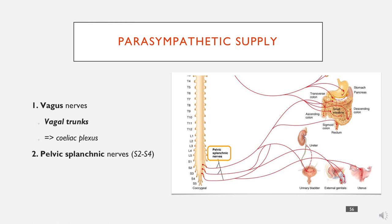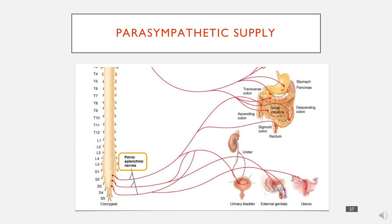The second source of parasympathetic supply is the pelvic splanchnic nerves — these are the autonomic fibres that come from S2, S3, and S4, so they're essentially spinal nerves. The third source of parasympathetic innervation in the abdomen is the enteric nervous system, which is the intrinsic nervous system of the bowel.